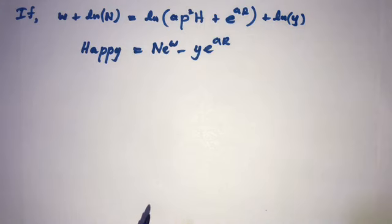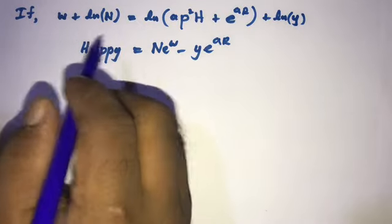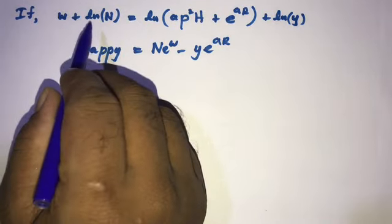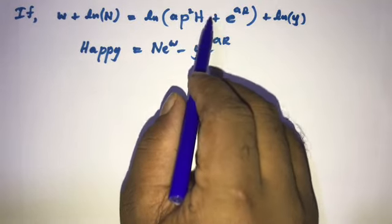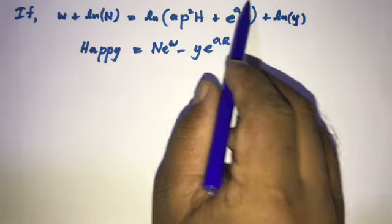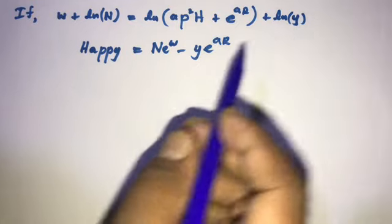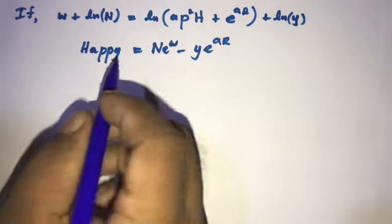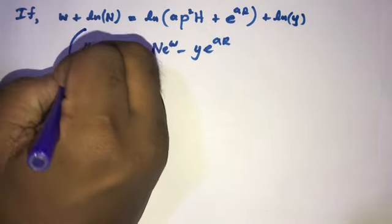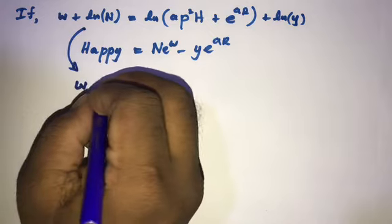Welcome to the Mathematics channel. Today we are going to solve this cool question. We have w plus natural log of n is equal to natural log of ap squared h plus e to the ar, plus natural log of y. We want to prove 'Happy New Year'. Let's start.